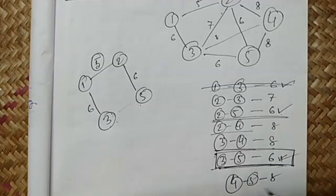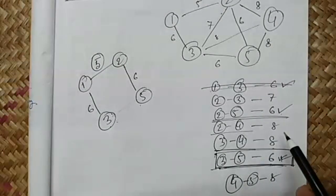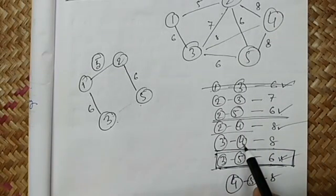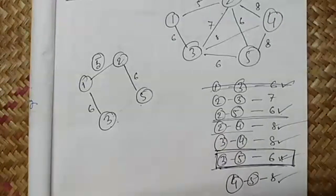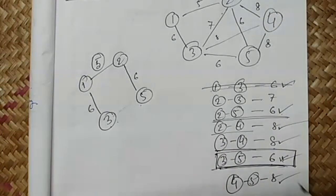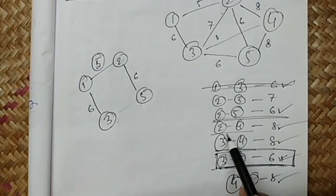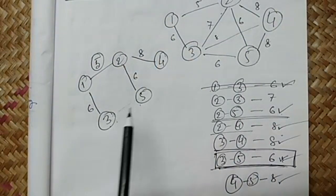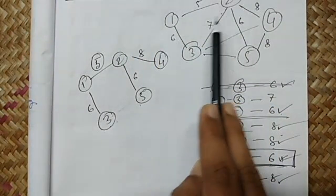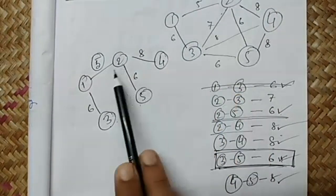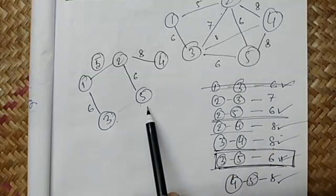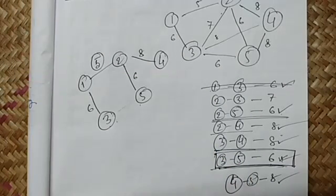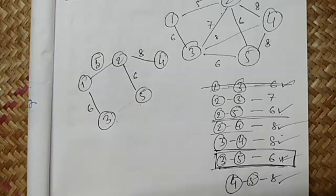We need to add node four. Four is connected to two, three, and five — all with weight eight. We can take any one of these; we take two-four with weight eight and join it. We maintain the positions of nodes as given in the network model. This is how in Prim's algorithm we find the minimum spanning tree.